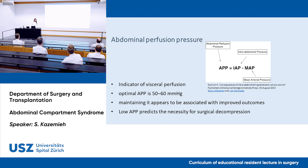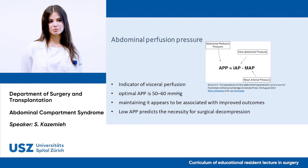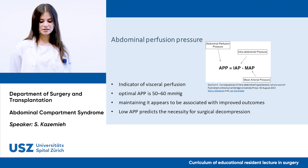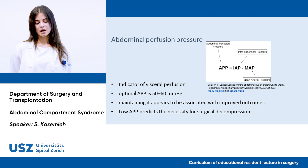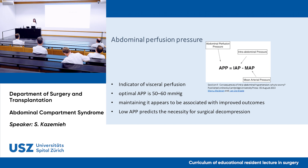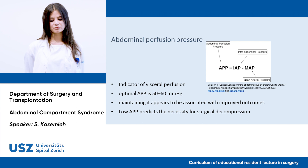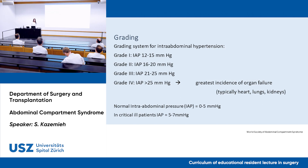The abdominal perfusion pressure indicates visceral perfusion and is calculated as mean arterial pressure minus intra-abdominal pressure. The optimal range is between 50 and 60 mmHg, and maintaining it appears associated with improved outcomes. A low APP predicts the necessity of surgical decompression, but the World Society of Abdominal Compartment Syndrome notes no consensus on its use as a resuscitative endpoint, since mean arterial pressure may be elevated due to increased systemic vascular resistance even though cardiac output is low, so hypoperfusion may occur despite acceptable APP.